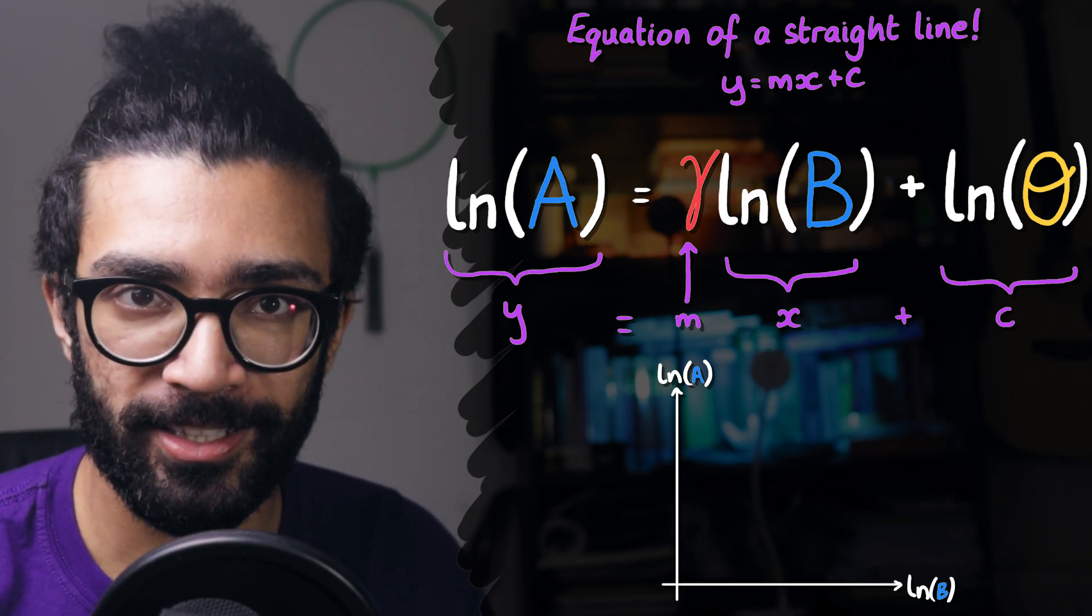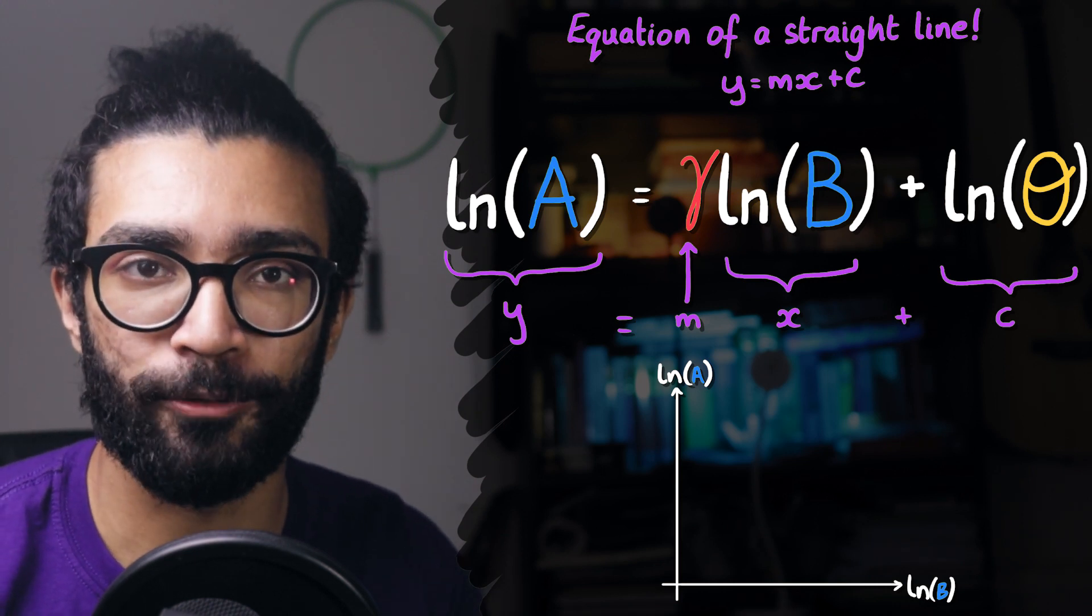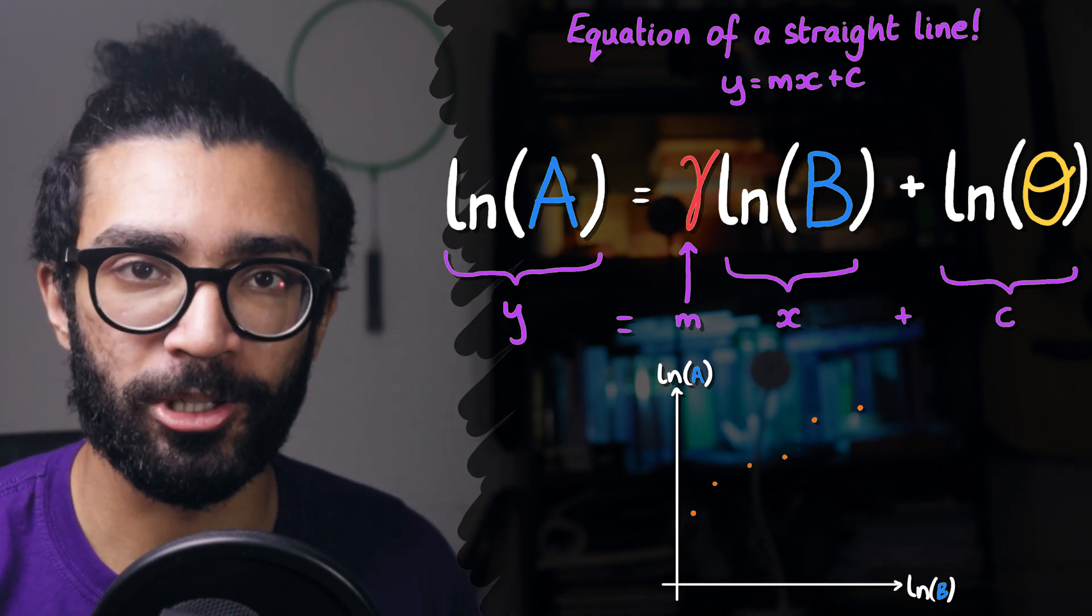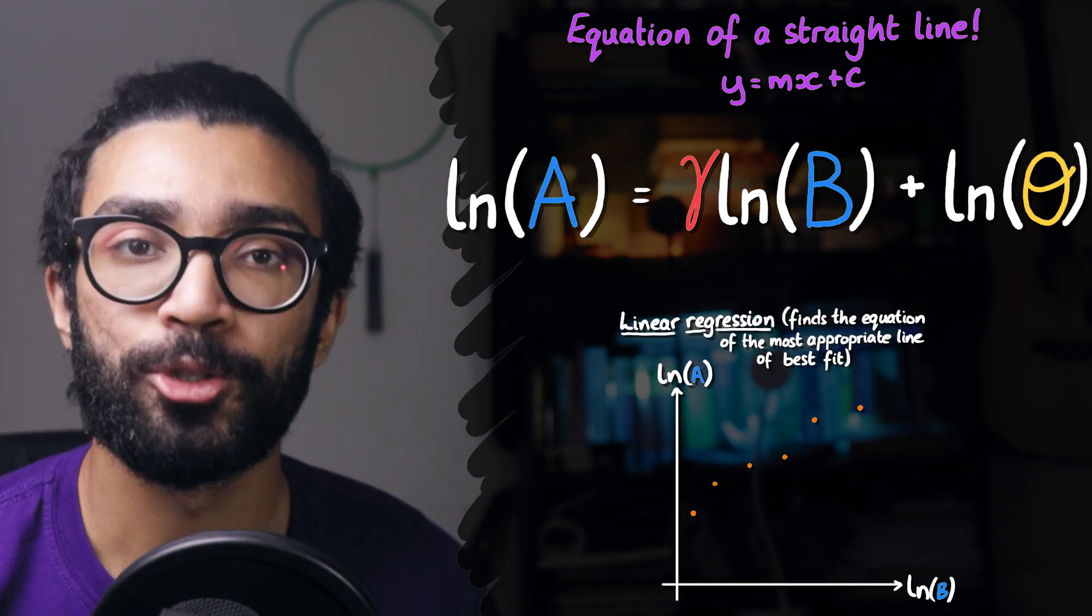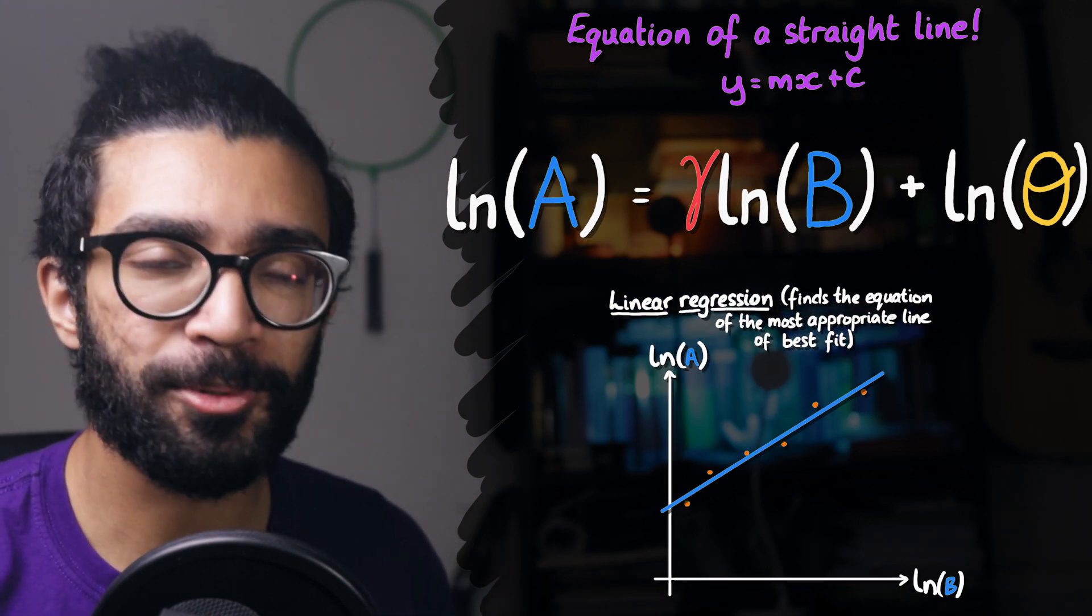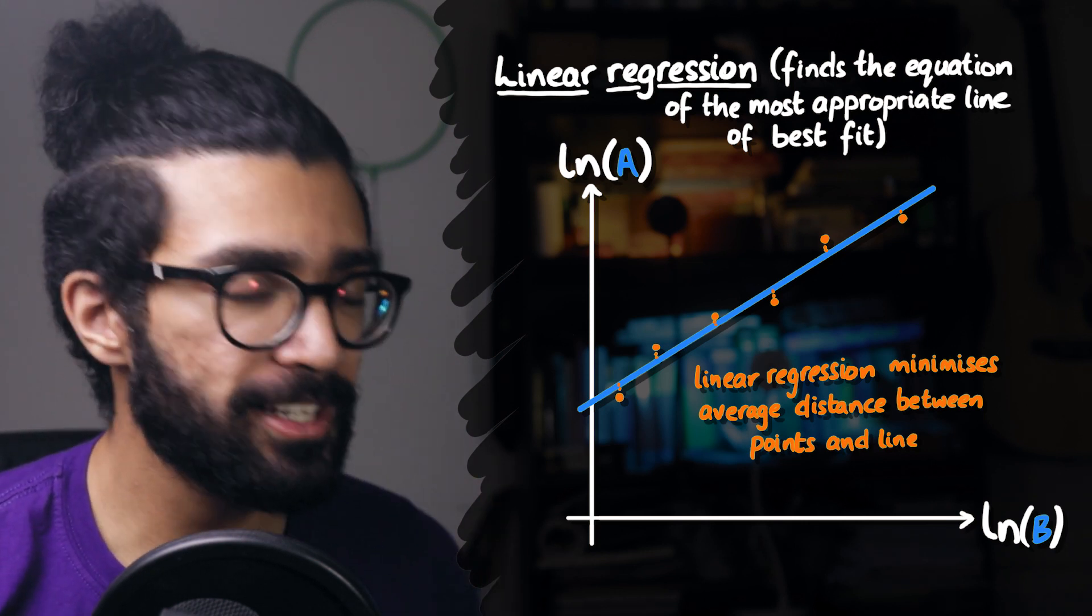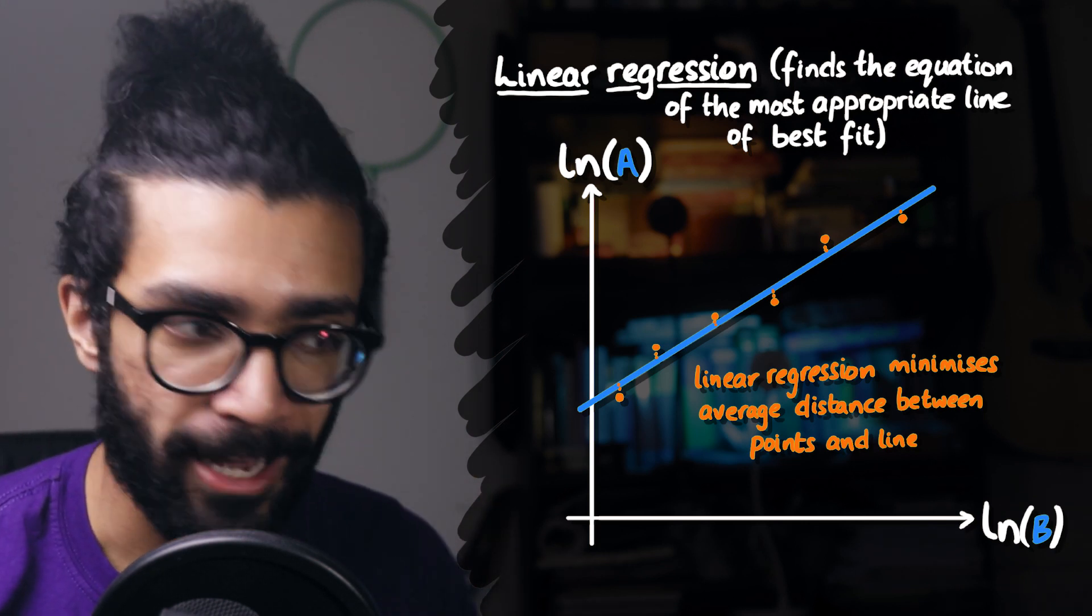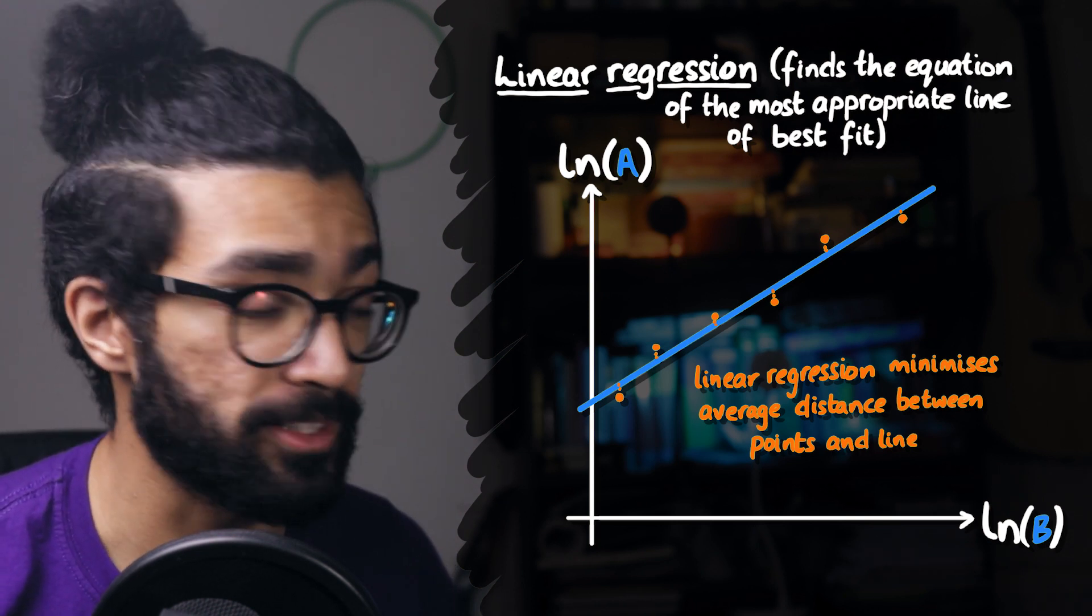There is a huge benefit to doing this, because as soon as we've plotted the natural log of A against the natural log of B, so this is what our data points would look like if we did that, we can use linear regression to plot a line of best fit. Now linear regression is a little bit complicated, but essentially what it tells us is the best straight line to plot for this data, because this is the line that minimizes the average distance between the points that we've gathered from our experiment and the straight line itself.